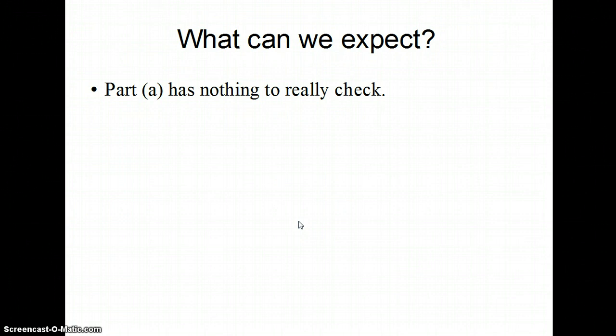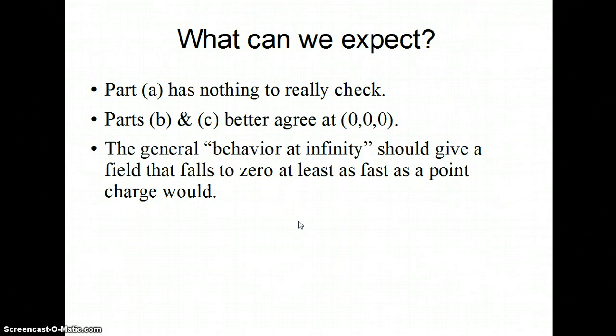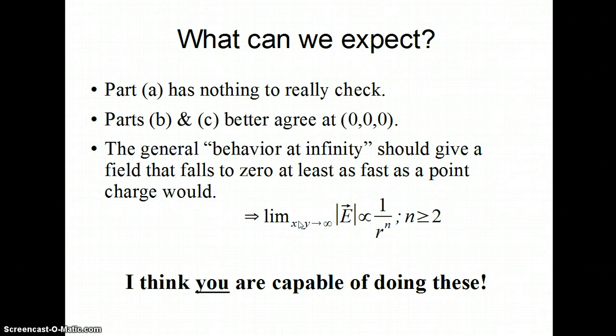Part A has nothing to really check. It's already calculated in one limit. Parts B and C, it's not really even taking a limit. Once I get the full solution, they better agree at the origin. In part B, I put off part of looking at that center region, and you'll have to do it. Finally, I would say the general behavior at infinity should give a field that falls off to zero at least as fast as a point charge would. The electric field falls off as one over R squared. In this case, it has to fall off at least that fast. In fact, it should fall off as one over R to the N, where N is at least three.